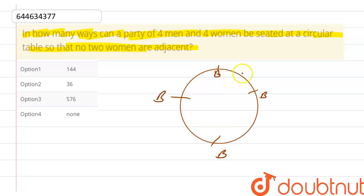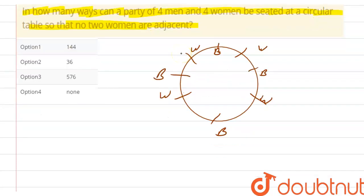So women will be one here, one here, one here, and one here. This will be the sitting of women. So in this case, no woman is sitting together. No two women are sitting adjacent.